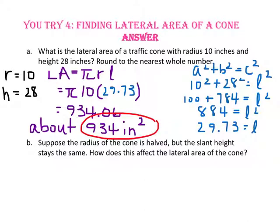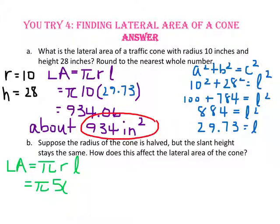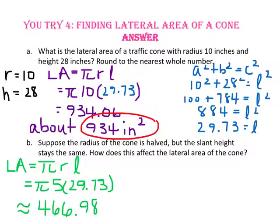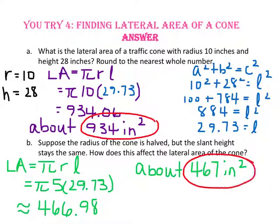For part B, suppose the radius of the cone is halved but the slant height stays the same. How does this affect the lateral area? Using pi times the radius times the slant height, we take half the radius, or 5, and keep the slant height at 29.73. That gives approximately 467 square inches. Since 467 is half of 934, when the radius is halved, the lateral area is also halved.